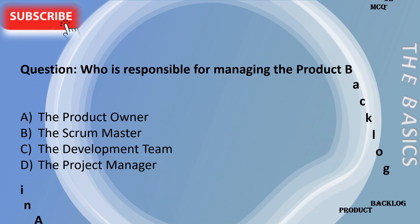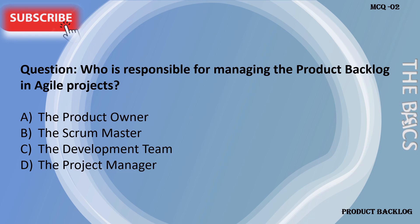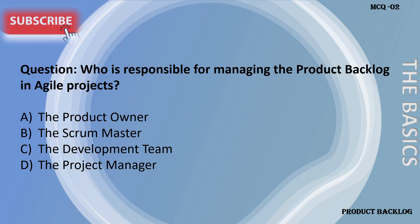Who is responsible for managing the Product Backlog in Agile Projects? A. The Product Owner. B. The Scrum Master. C. The Development Team. D. The Project Manager.